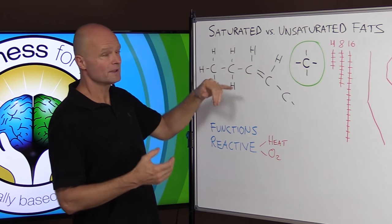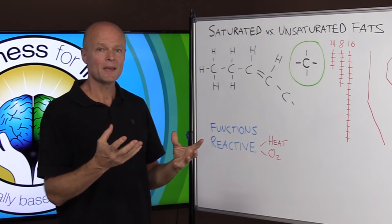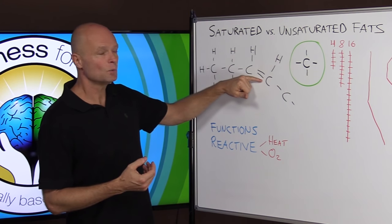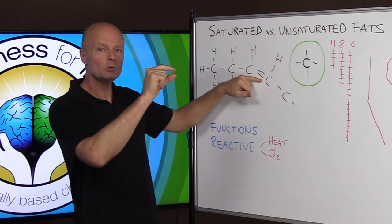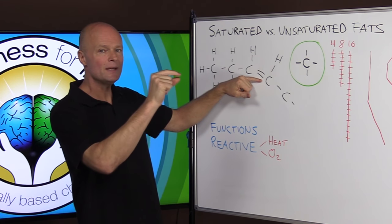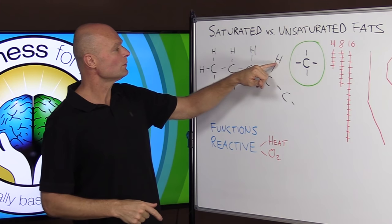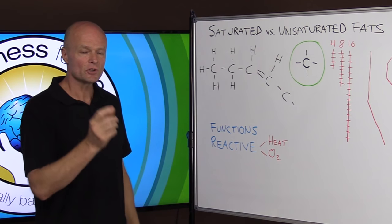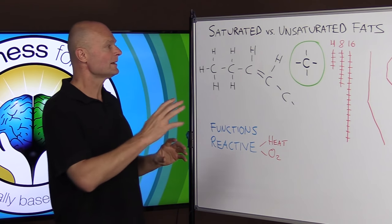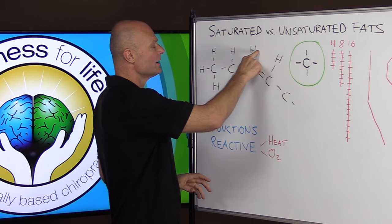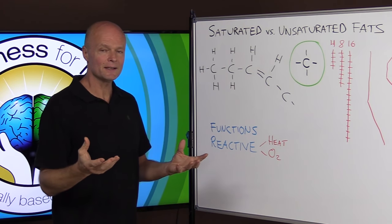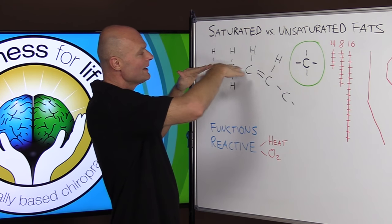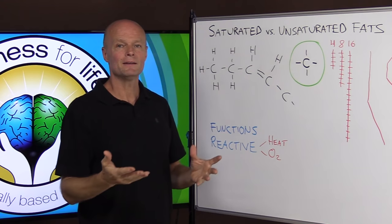But sometimes the carbons connect with a double bond, meaning they use up two of these connections between them, and that only leaves them room to bind with one more hydrogen instead of two. In nature, virtually all the time, these hydrogens are going to end up on the same side, meaning a cis transformation. What this means is that the molecule is going to make a bend, and this is really important for the chemical properties and for the melting point and for what sort of nutrition properties that fatty acid has.